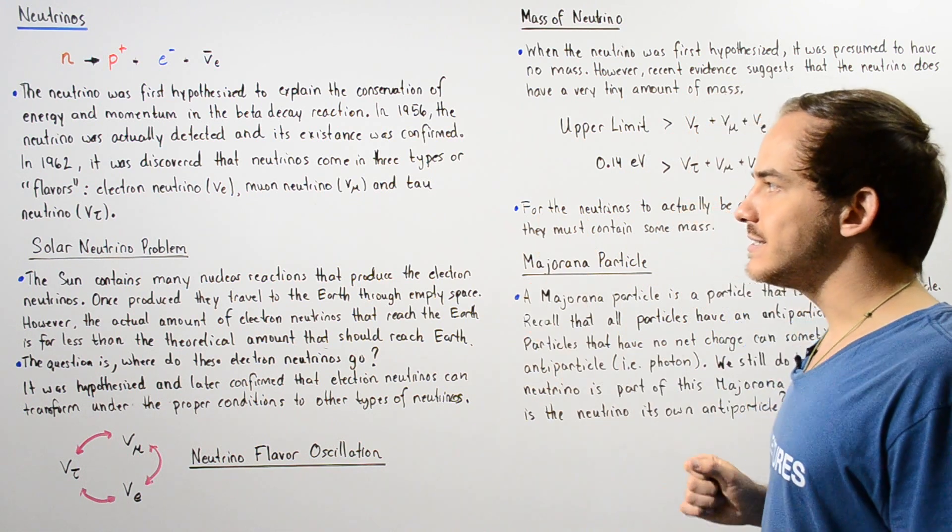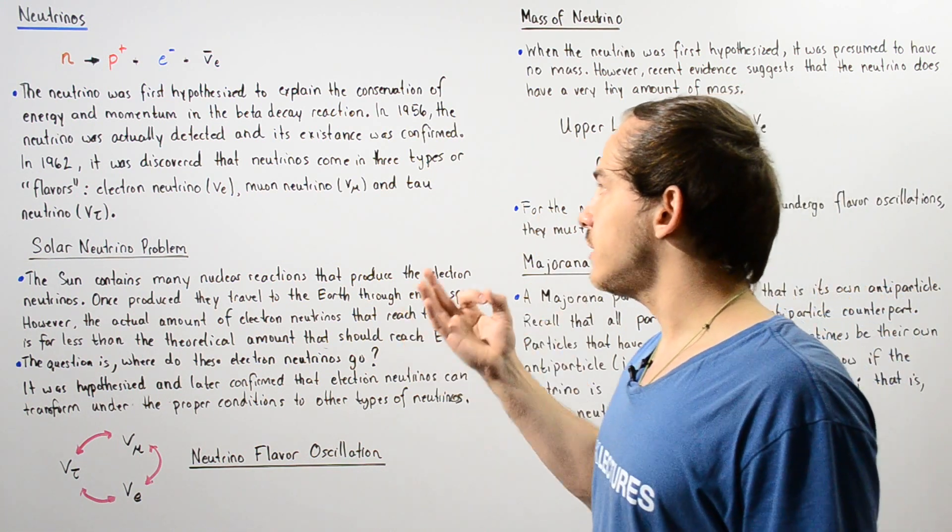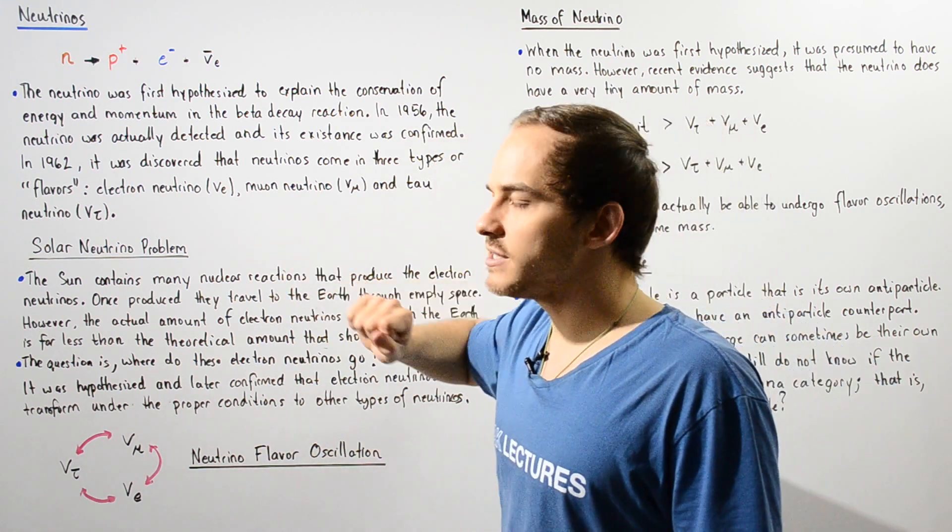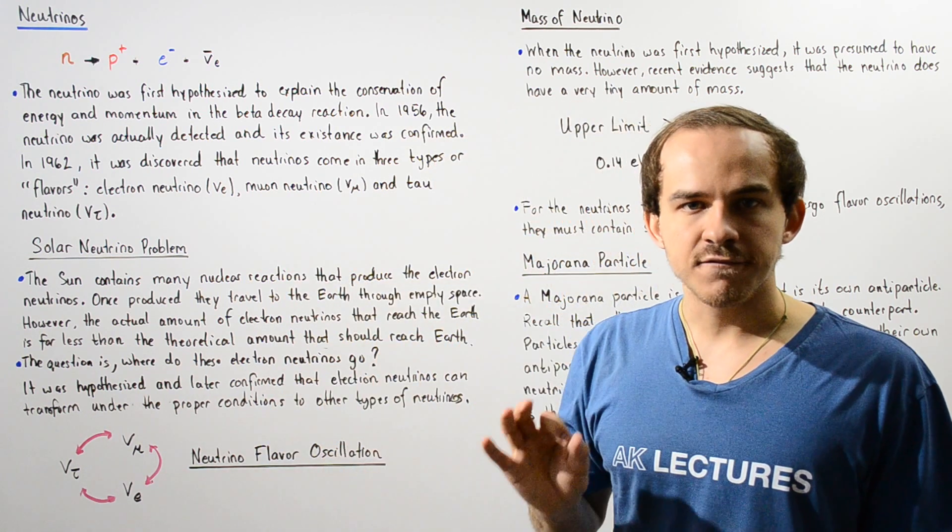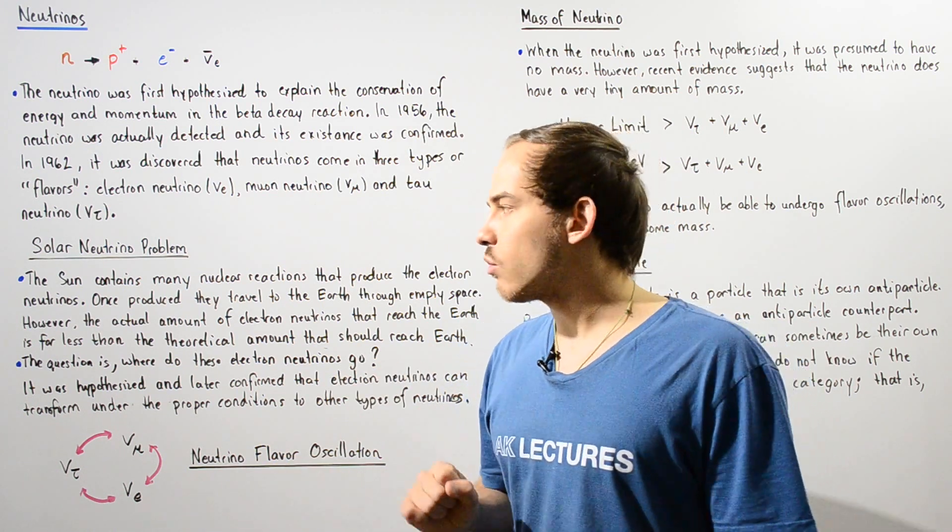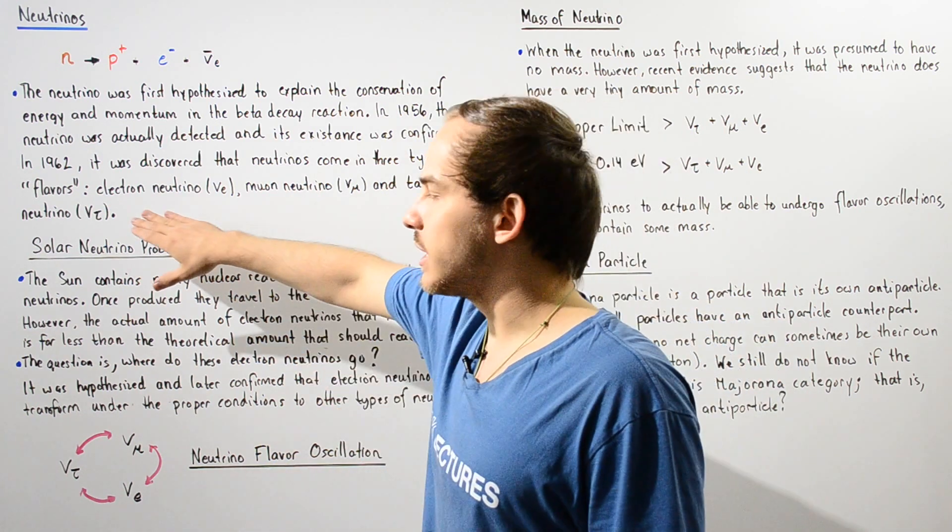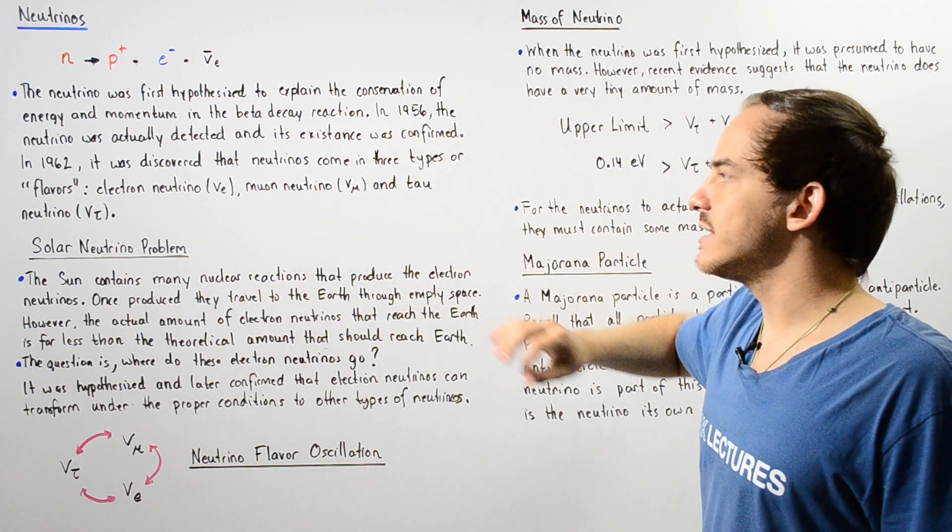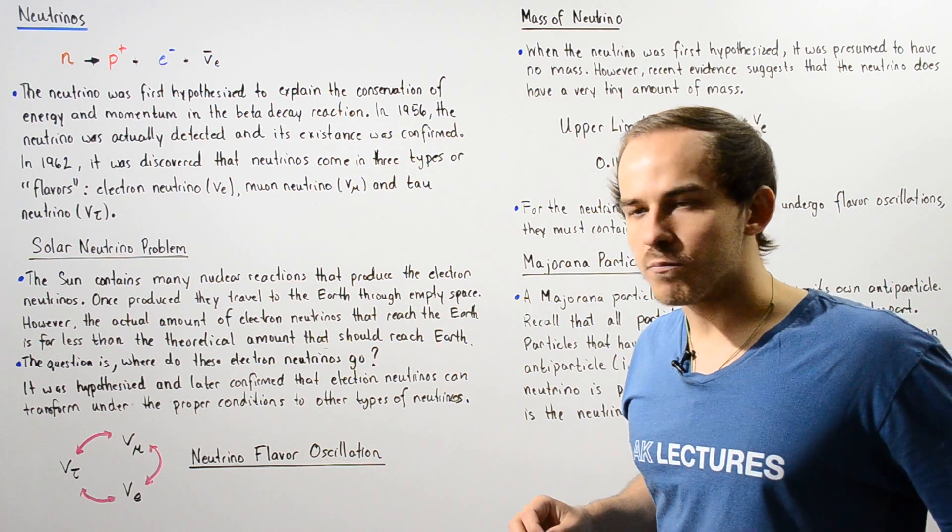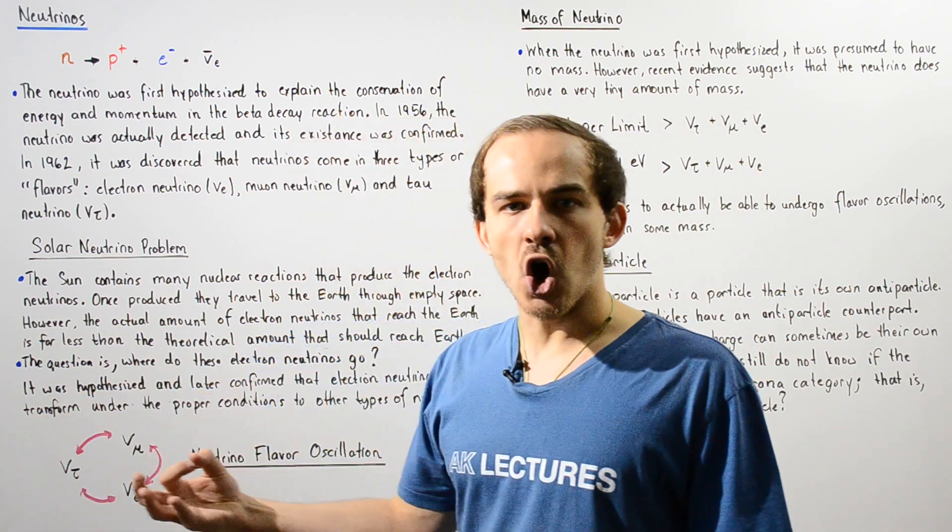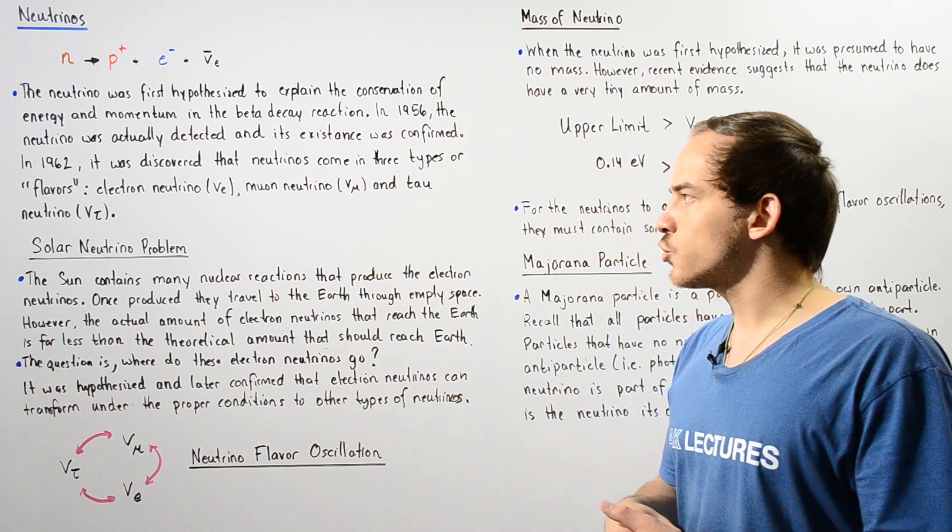And in 1962, it was discovered that the neutrinos come in three different types. So these types are known as flavors. We have three different flavors for our neutrino. We have the electron neutrino, the muon neutrino, as well as the tau neutrino.